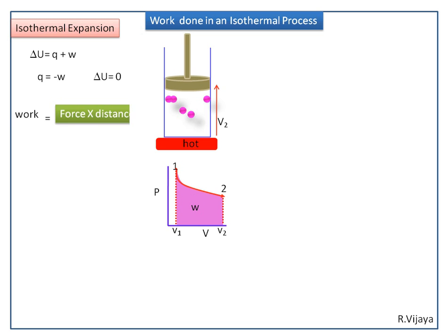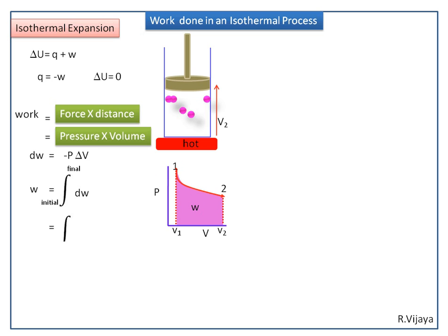Work is equal to force into distance — in this case, pressure into volume. Here, volume is the variable, so dW is equal to minus P·dV. To get W, integrate this value within the limits, from V1 to V2, of P·dV.